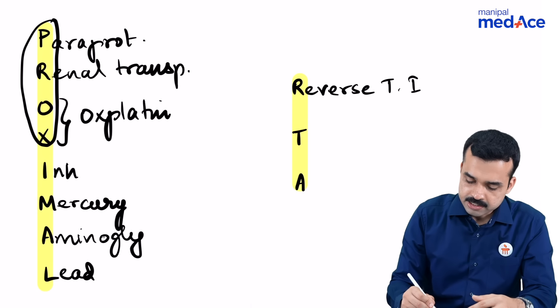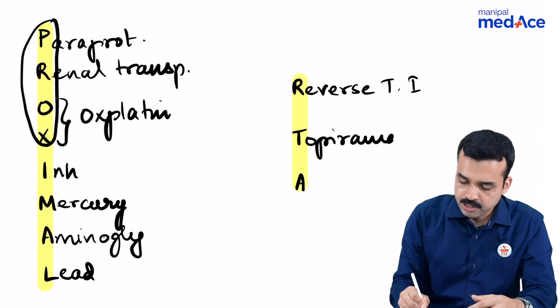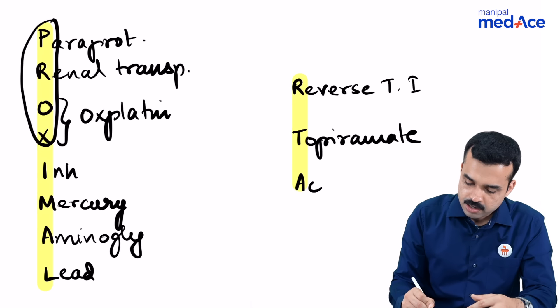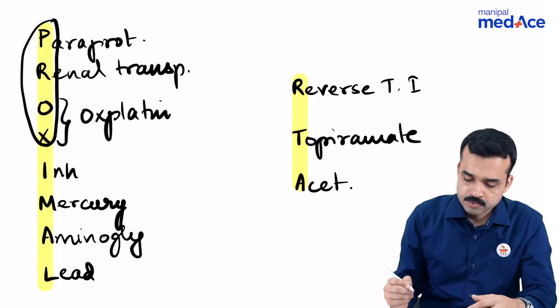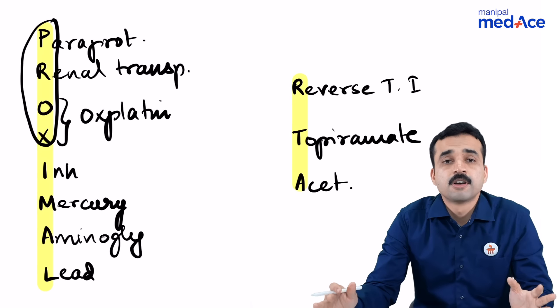T stands for topiramate, and finally A stands for acetazolamide. So these are the important causes of type 2 proximal renal tubular acidosis.